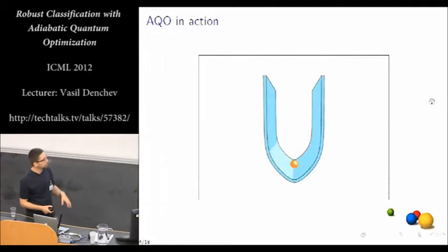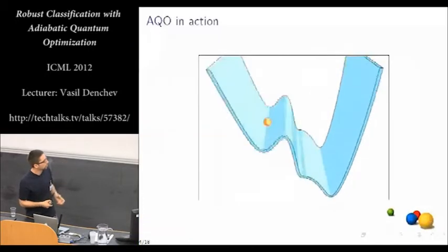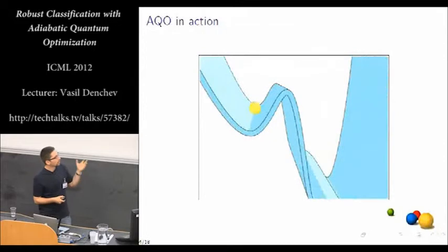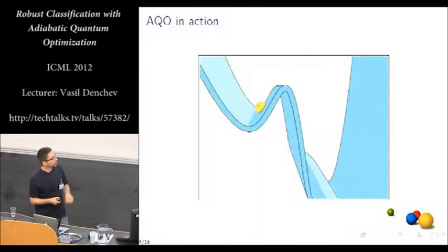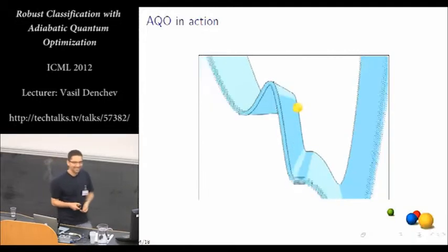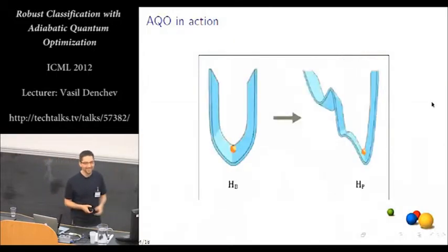So here is how this goes. We initialize the system into the beginning Hamiltonian in the ground state, and then we start to gradually deform the Hamiltonian into the problem Hamiltonian. But classically, we might get stuck in a local minimum. However, due to quantum effects, we might actually be able to tunnel through a barrier and still find the ground state of the problem Hamiltonian. So this is the quantum magic.